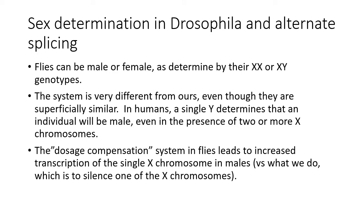Flies can be males or females, XX or XY, just as we can. But it's very different from ours because if you're a mammalian female you've got two X's, and a mammalian male has only one X. So you have to have a way to alter the dosage in order to equalize dosage between the sexes. In mammals, what we do is inactivate one of the X's in all female cells. In Drosophila it's totally different — what they do is increase the expression of the single X chromosome in males. So even at the level of the dosage compensation system, the two systems are really totally different from one another.